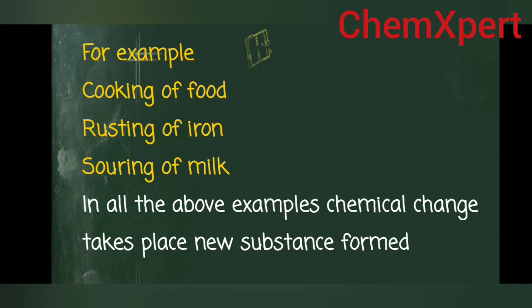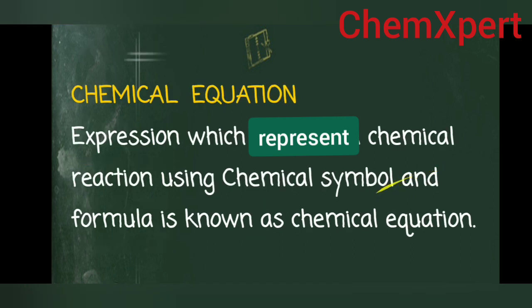To represent a chemical reaction, we use a chemical equation. A chemical equation is an expression which represents a chemical reaction using chemical symbols and formulas. In this chapter we will study different types of chemical reactions and the balancing of chemical equations.